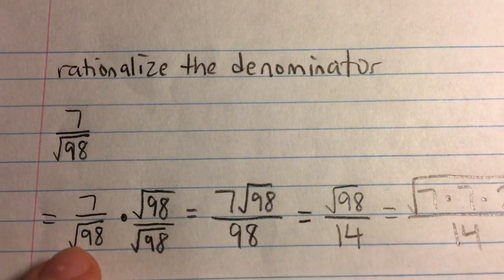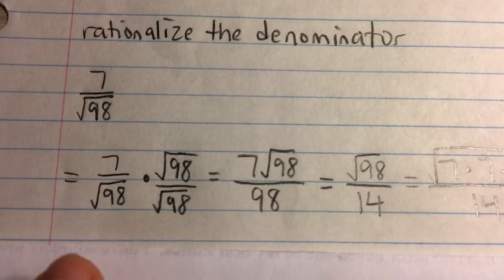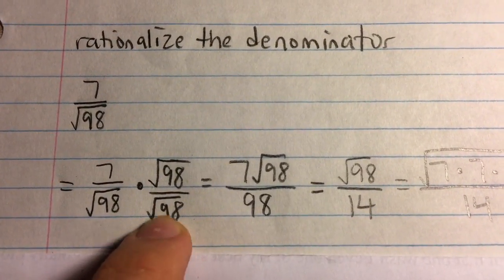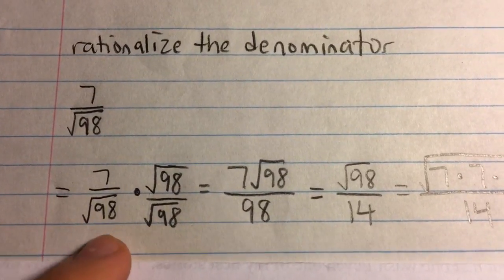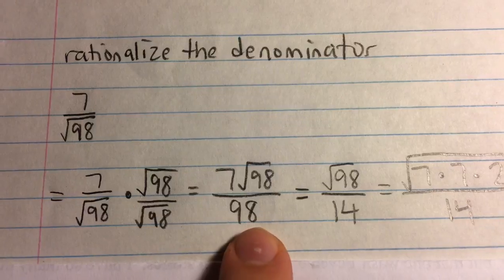For example, the square root of 2 times the square root of 2 is just 2. And so if we multiply by square root of 98 over square root of 98, which is 1, we're not actually changing the original values, but we can do this to kind of manipulate the expression.